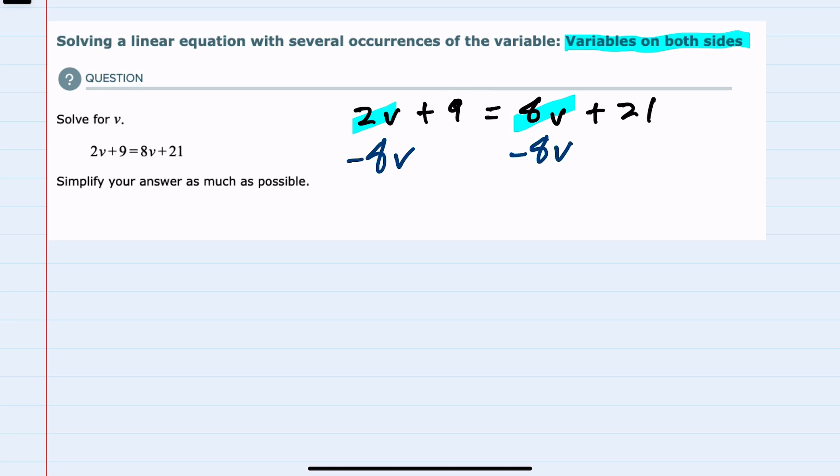On the left-hand side, you can see that I lined up the 2V and the 8V, because since they are like terms, I can combine those like terms. 2V minus 8V is minus 6V, and then I can bring down the other terms, the plus 9 and the 21 on the right-hand side.